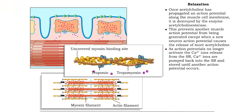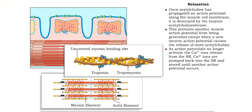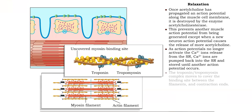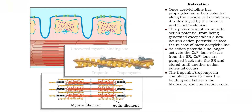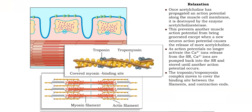The calcium ions are actively pumped back into the sarcoplasmic reticulum. The troponin-tropomyosin complex moves to cover the binding site between the filaments, and contraction ends.